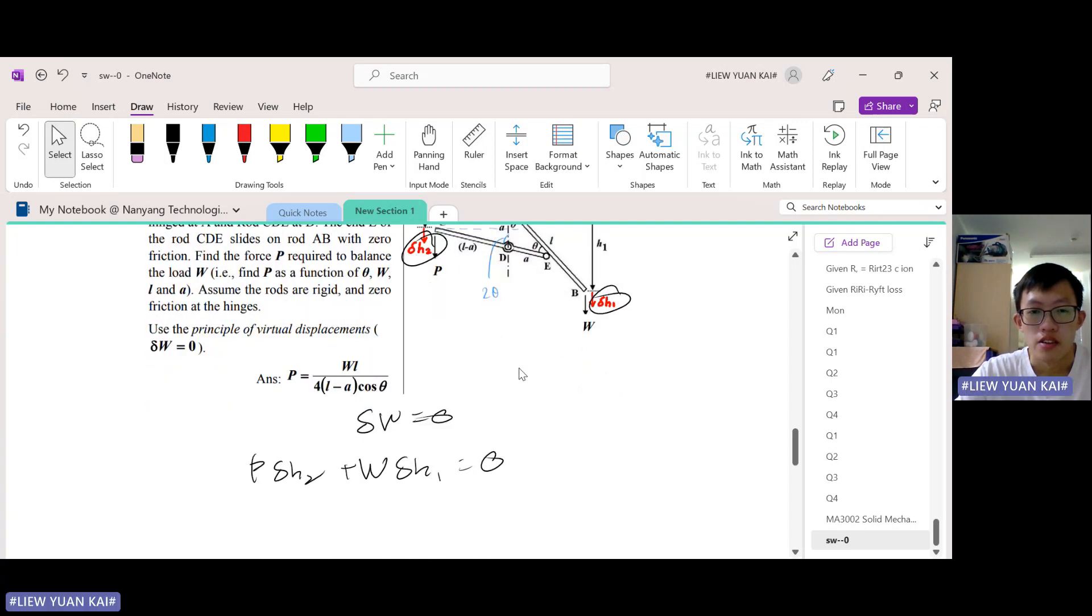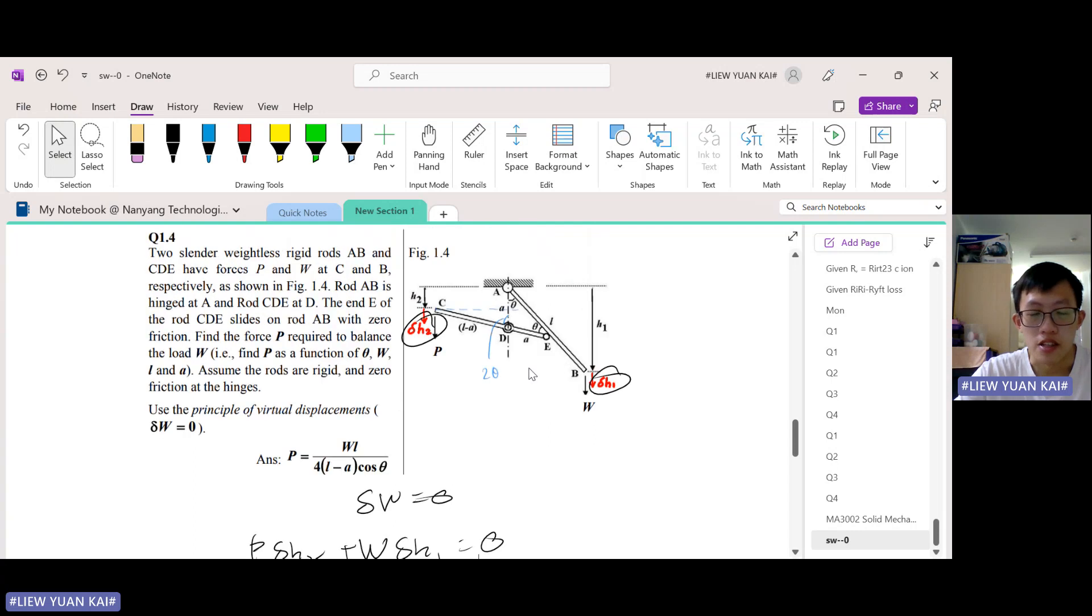Now the variable to relate them to, the common variable, is actually theta. As theta changes, h2 will change; as theta changes, h1 will also change, so they're both related to theta. Let's check the geometry of the structure—how can we relate them? First, let's do h1.